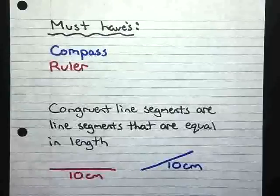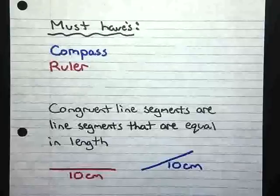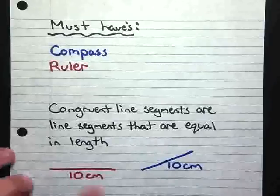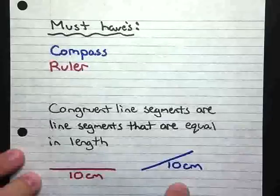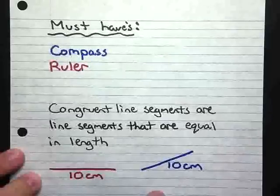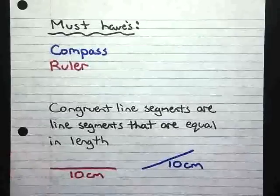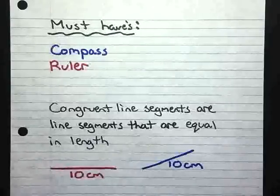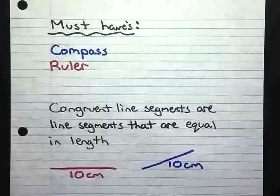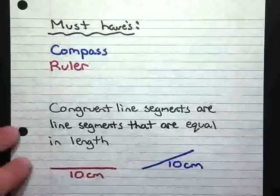A congruent line segment are line segments that are equal in length. You can see here that I have two different line segments, but each one is 10 centimeters. Because they're both 10 centimeters, they're considered congruent. And this is going to be what we're constructing today, we're going to be taking one line segment and constructing one that is going to be the exact same length as the one that we're given.